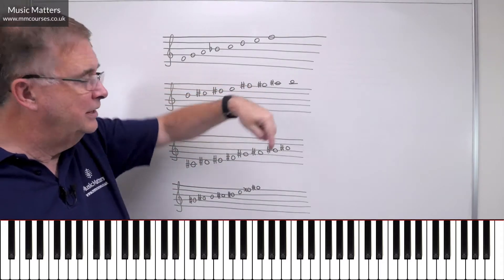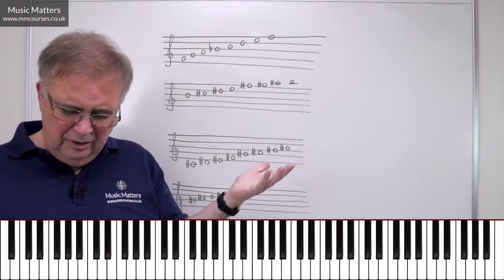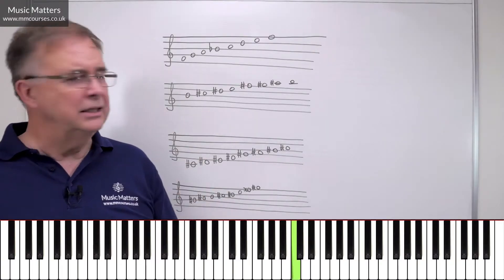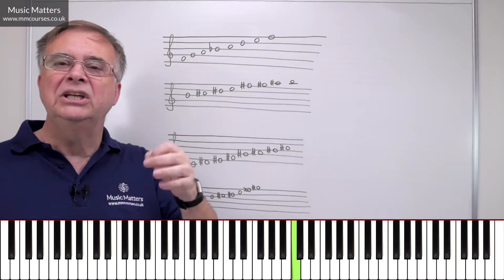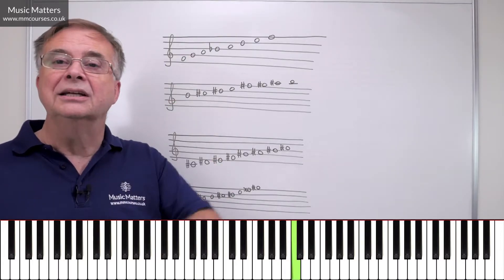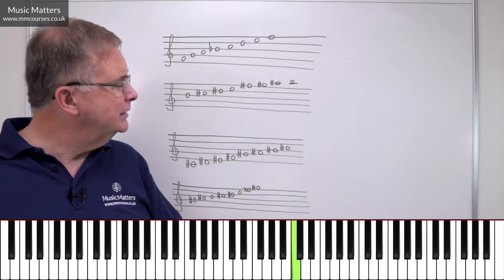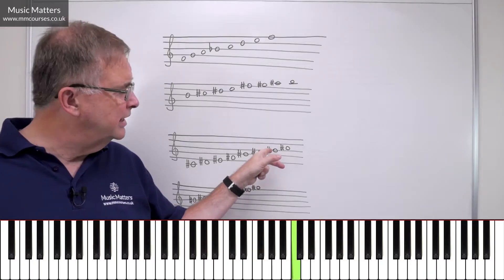Same with the B-sharp here, because B-sharp, you think, well, if I'm going to play B-sharp, surely that's C. Yes, it is. It's an enharmonic equivalent of C. It sounds exactly like C, but it's an enharmonic equivalent. That's a B-sharp.